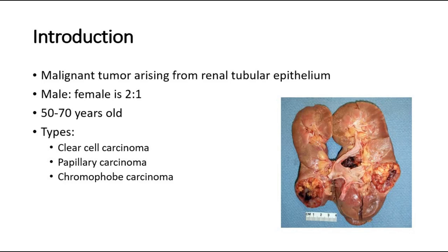Renal cell carcinoma accounts for around 85% of all malignant renal tumors in adults, making it the most commonly seen malignant renal tumor. There are a few types, such as clear cell carcinoma, which is the most common type.